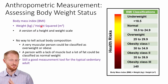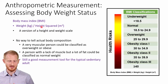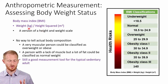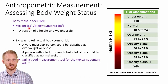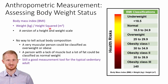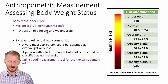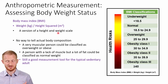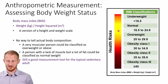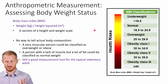Body mass index, or BMI, is basically just a height and weight ratio. It's weight in kilograms divided by the height of the person in meters squared, so you're going to do height times itself in meters. When you do this, you're going to get a single number that is in kilograms per meters squared.